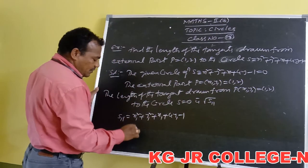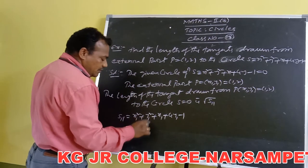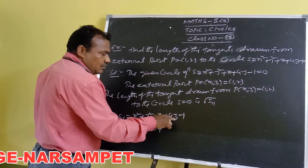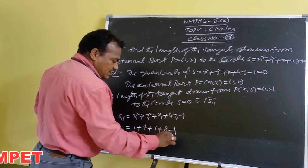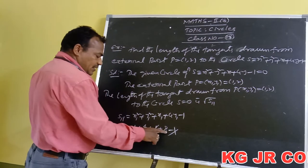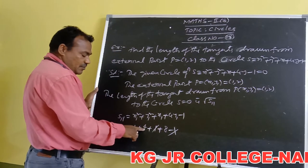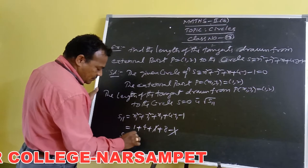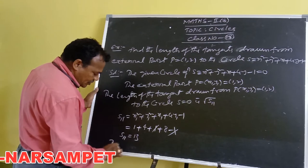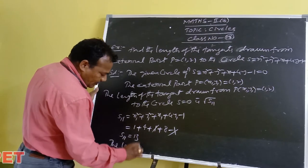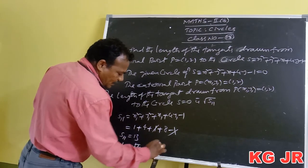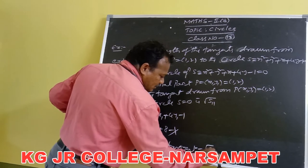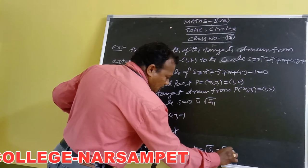Substituting x₁ = 1 and y₁ = 2: S₁₁ = 1² + 2² + 1 + 4(2) - 1 = 1 + 4 + 1 + 8 - 1 = 13. So S₁₁ = 13. The length of the tangent is √S₁₁ = √13 units.